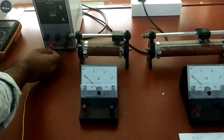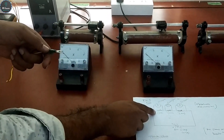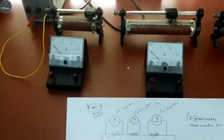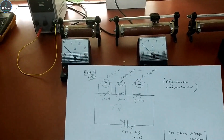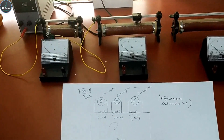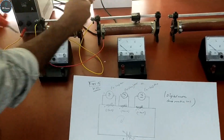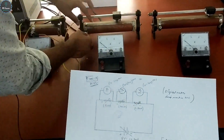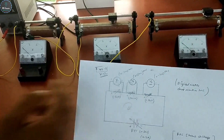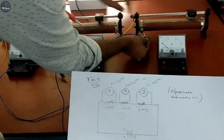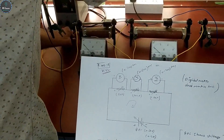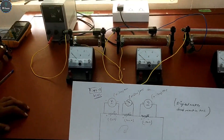Connect the RPS positive terminal to the upper terminal of the first rheostat — that is the positive terminal. The lower terminal of the first rheostat connects to the upper terminal of the second rheostat. The lower terminal of the second rheostat connects to the upper terminal of the third rheostat. Finally, the lower terminal of the third rheostat connects back to the RPS negative terminal, completing the series circuit.